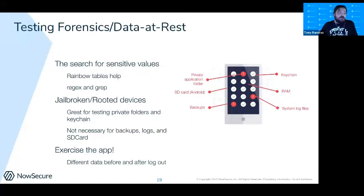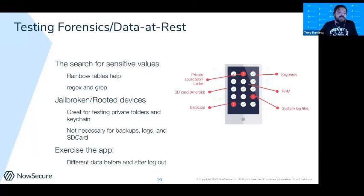Developers often use Base64 for sensitive data. It's also useful to get a jailbroken or rooted device, because then you can access private application folders, see what's being stored there, and see what's in the keychain. That said, jailbreak is not necessary for all of the attack surface in mobile, since some areas are accessible without one.